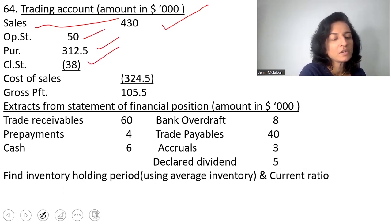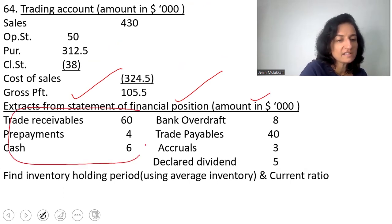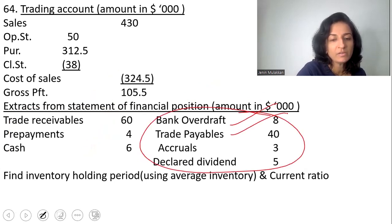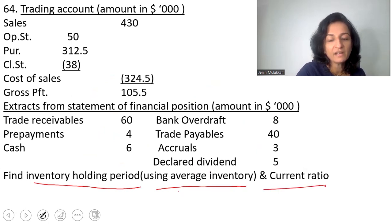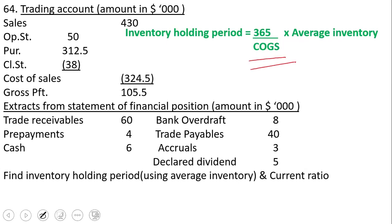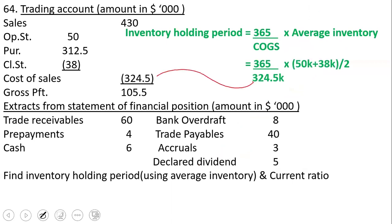Question 64: a trading account is given with sales, opening stock, purchases, closing stock, and cost of sales to arrive at gross profit. Extracts from the statement of financial position include current assets — trade receivables, prepayments, and cash — and current liabilities — bank overdraft, trade payables, accruals, and declared dividend. Find the inventory holding period using average inventory and the current ratio. Inventory holding period = (365 ÷ cost of goods sold) × average inventory.